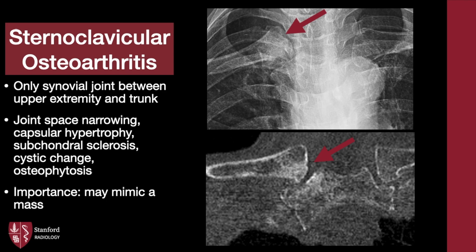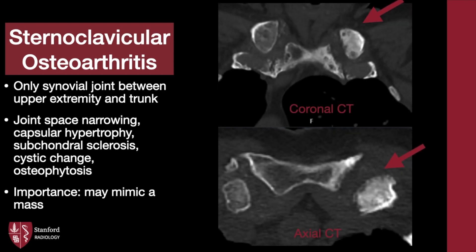Sternoclavicular osteoarthritis is common because it's the only synovial joint between the upper extremity and the trunk. Joint space narrowing, capsular hypertrophy, subchondral sclerosis, cystic change, and osteophytosis can be seen, like any other part of the body with osteoarthritis. If there is significant osteophytosis associated with the joint, patients may palpate a mass-like structure on exam, prompting further investigation.